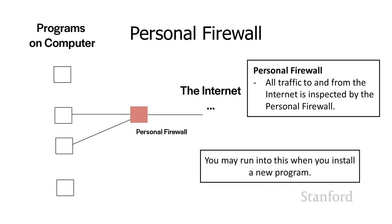You are most likely to encounter the personal firewall when you install a new program. You used to have to turn these on explicitly, but at this point all operating systems are running them by default. Typically, if you're installing a program that needs to use the internet — like a new game you want to play with friends — the firewall software would say, you're trying to run this game and it's asking if it can send information out to the internet. Should I approve access to the internet for this particular program? And you can say yes.